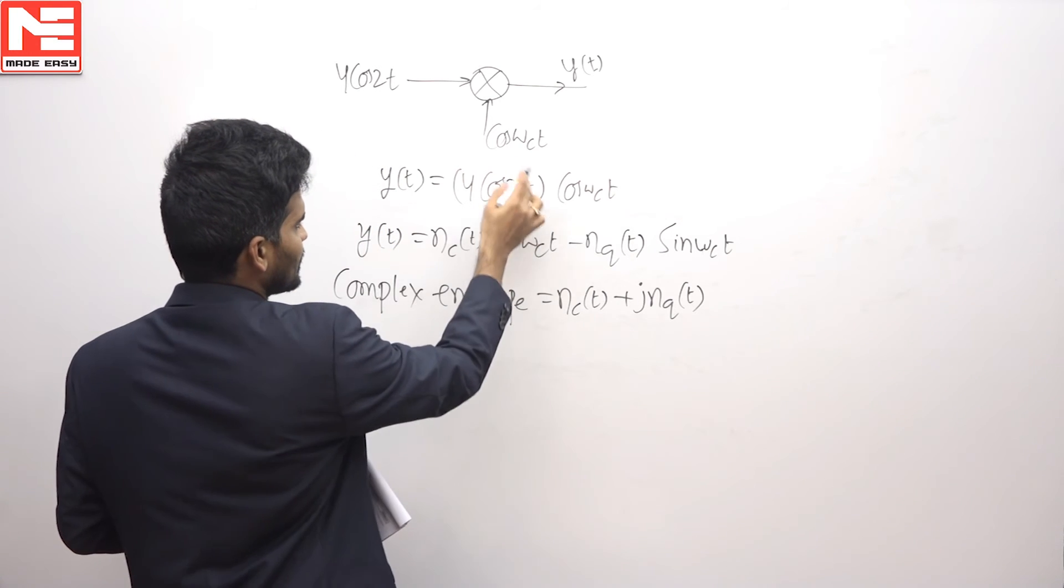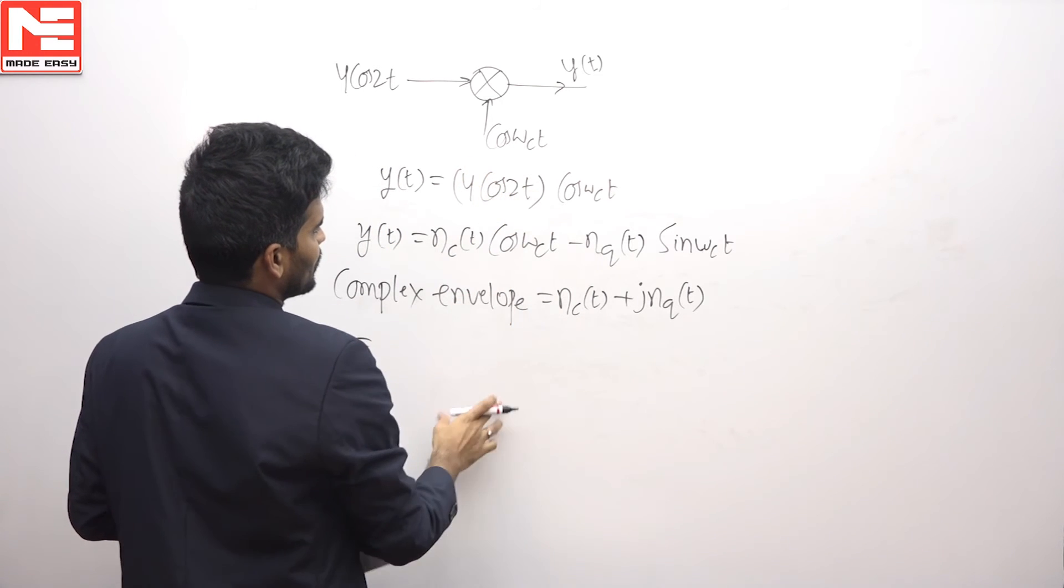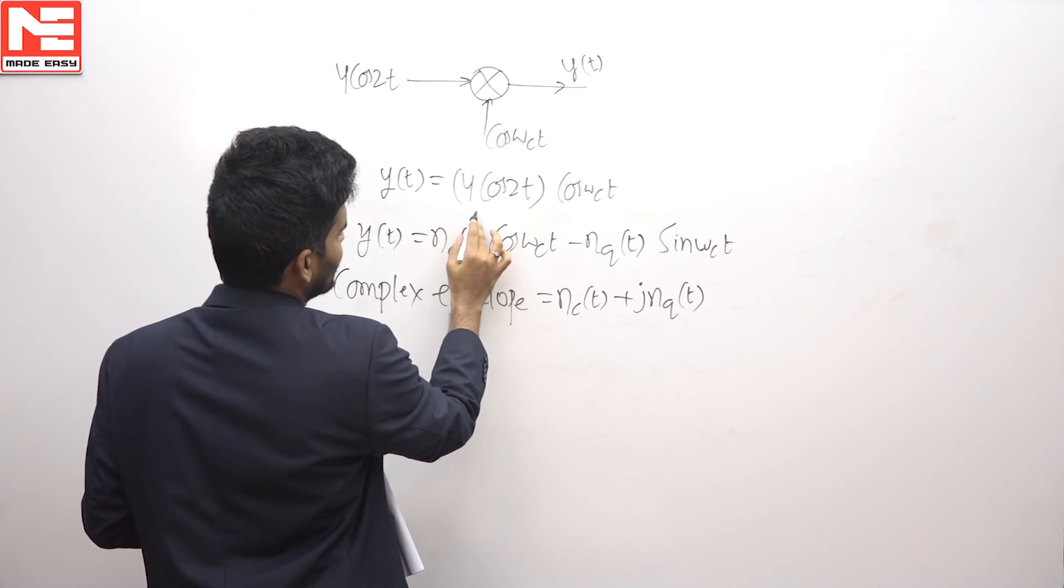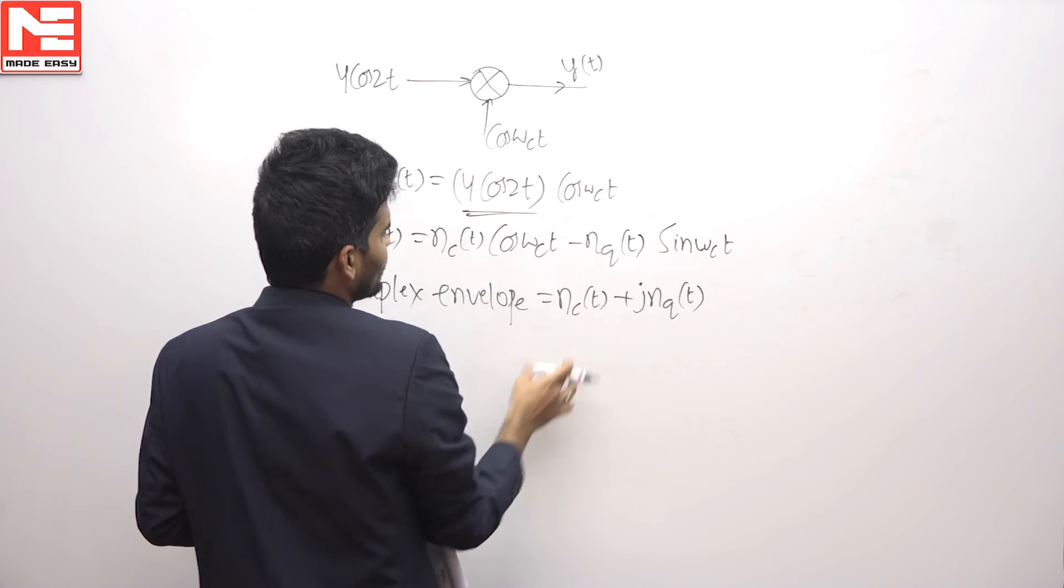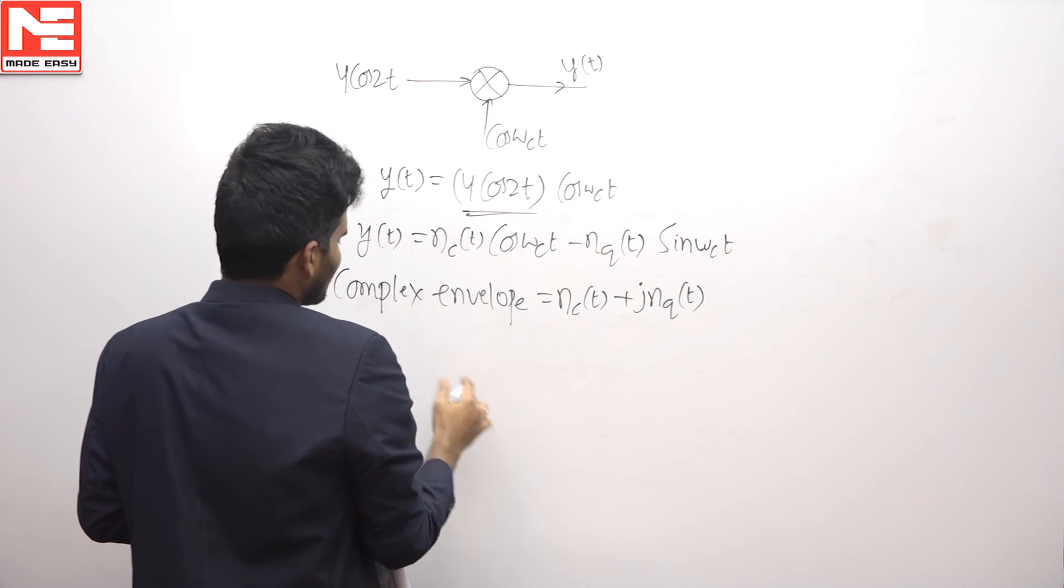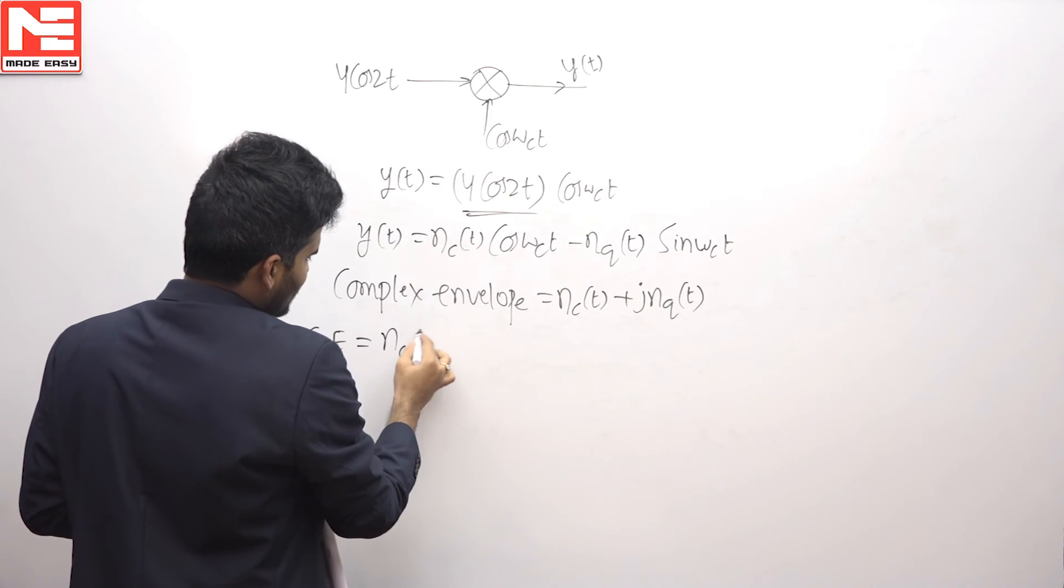So nc(t) will be 4 cos 2t. This is nc(t) cos ωct, and no sine terms here, so nq(t) will be 0. So the complex envelope simply is nc(t).